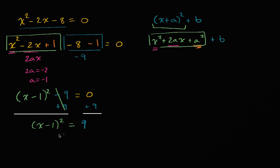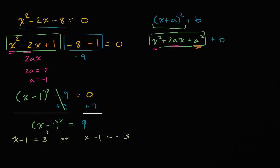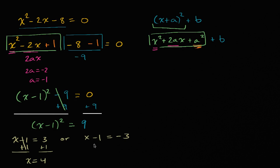If x minus 1 squared is 9, that means x minus 1 is either the positive or the negative square root of 9, so positive or negative 3. We can say x minus 1 equals positive 3, or x minus 1 equals negative 3. Adding 1 to both sides of each equation gives x equals 4, or x equals negative 2.